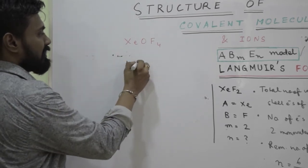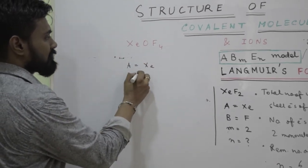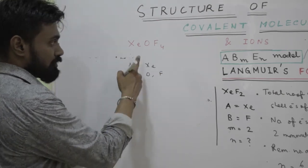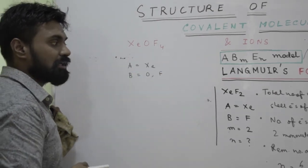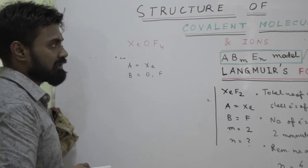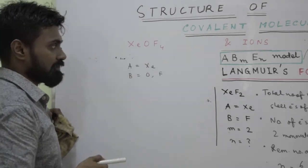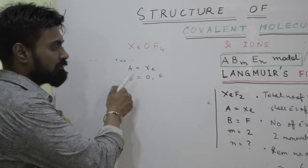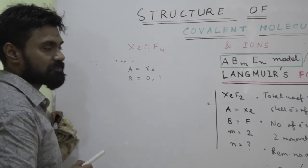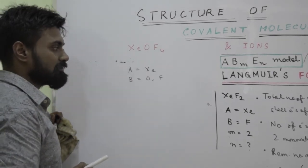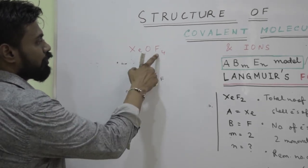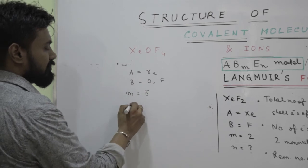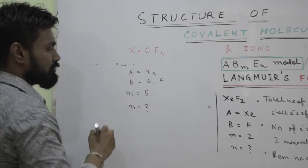A will be xenon, B will be oxygen and fluorine both. Because in that case, in case of xenon fluoride, there are only one type of B atoms, but here you find two different B atoms. And note here, one B atom is oxygen which is bivalent, and another B atom is fluorine which is monovalent. Now what will be m? m will be 4 plus 1, that is 5. What is n? n we do not know.